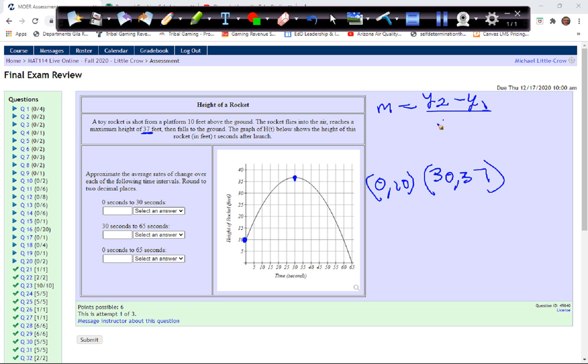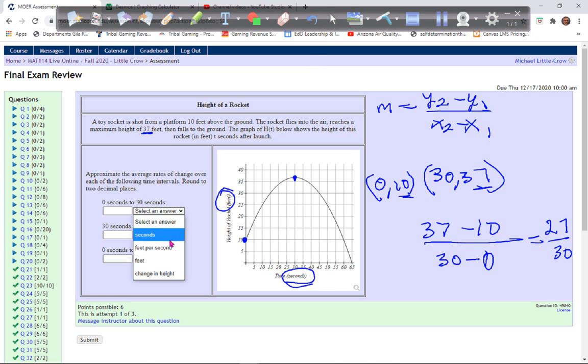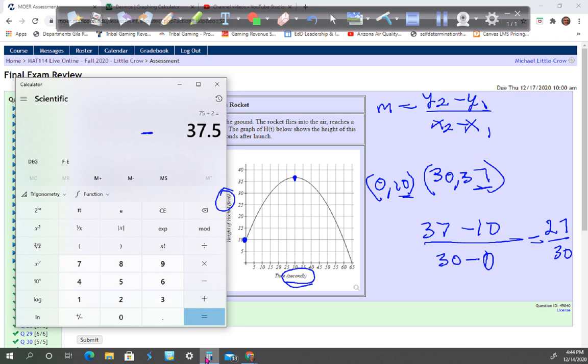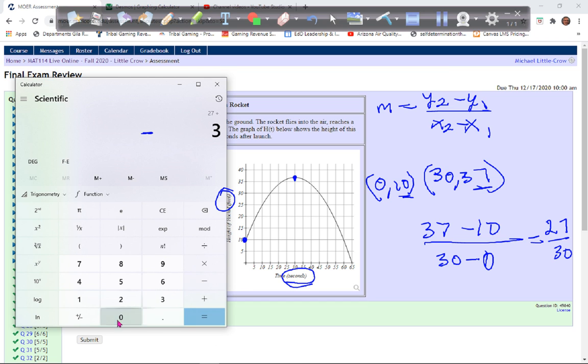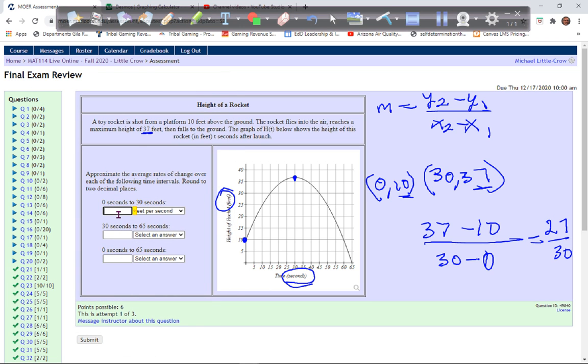y2 minus y1 over x2 minus x1, that's average rate of change. So that's 37 minus 10, taking the y values in the top, x values in the bottom, 30 minus 0. So that's 27 over 30, that's our rate of change, and the units are going to be feet per second. 27 divided by 30, and they want it rounded to two decimal places, so 0.90.